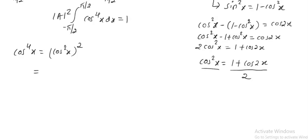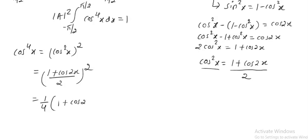Now we have cos squared x. So cos to the power 4x is (1 plus cos 2x divided by 2), the whole squared. Taking 2 outside gives 1 by 4 times (1 plus cos 2x) the whole square. Expanding using (a plus b) squared equals a squared plus 2ab plus b squared.